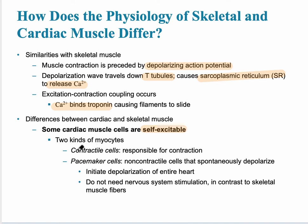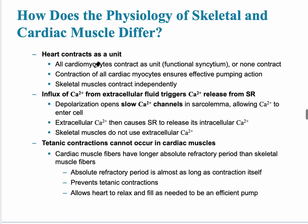The two kinds of myocytes are contractile cells, which make up the large majority, and pacemaker cells, which form the intrinsic conduction system of the heart. The heart also contracts as a unit. There's an influx of calcium, but it comes first from the extracellular fluid, not just the sarcoplasmic reticulum. Clinically, when patients suffer from heart failure, one of the first medicines given increases the amount of extracellular fluid calcium.